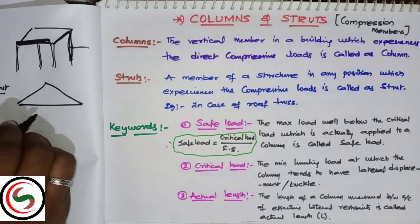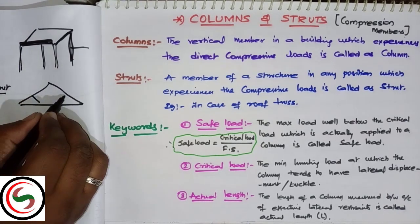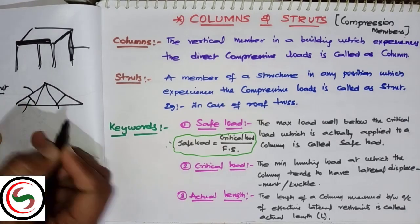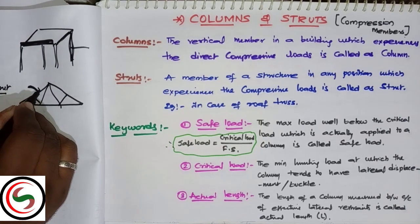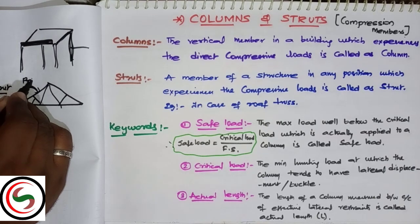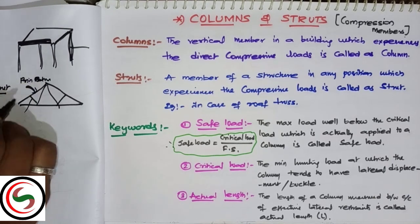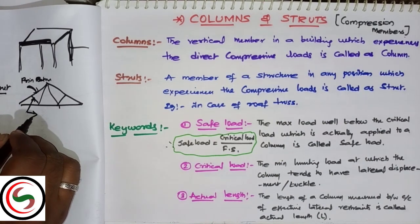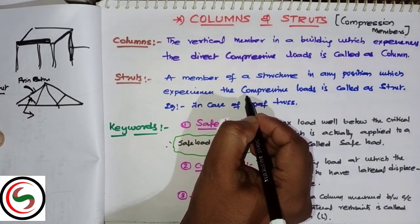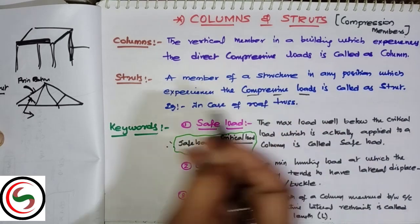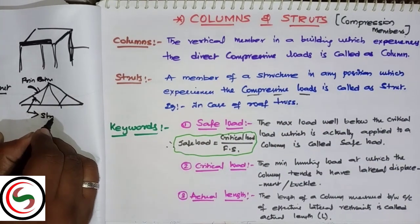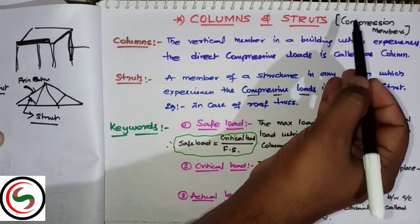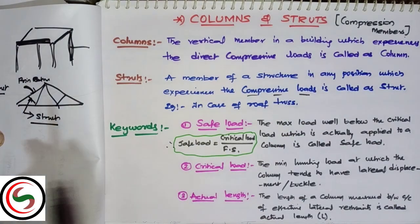What do you mean by a strut? Suppose if you go to any functional truss, you can see truss portions like this. There will be some compression members here. This is also a compression member. This compression member is called a principal rafter, whereas this inclined member which is also experiencing compressive loads is called a strut.